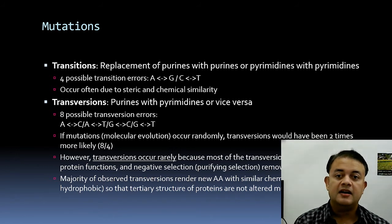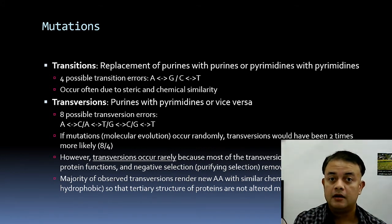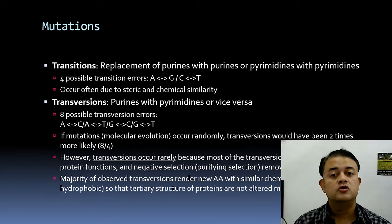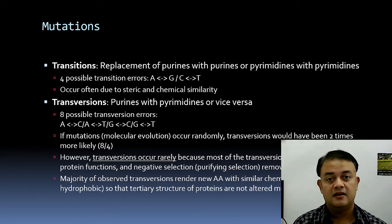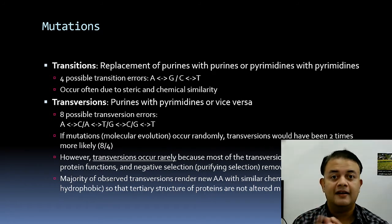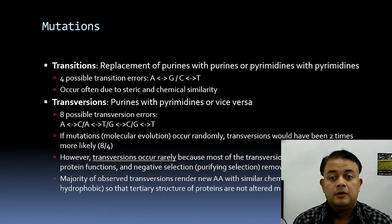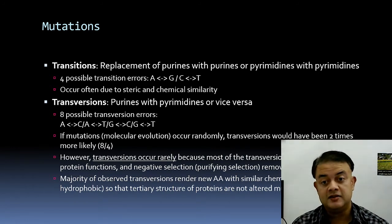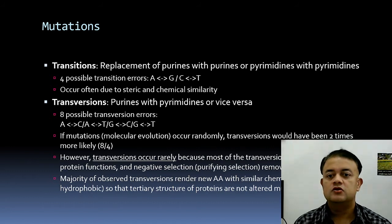Mutations can be of two types: transitions or transversions. Transitions mean replacement of purines with purines (double-ring with double-ring) or pyrimidines with pyrimidines (single-ring with single-ring). There are four possible transitions: A↔G and C↔T. Transitions occur quite often due to steric and chemical similarity between the substituted bases.